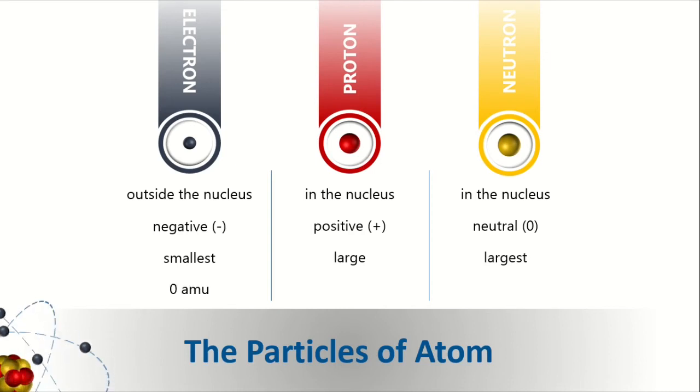Electron, because of its mass, carries an equivalent of zero unit of atomic mass. While proton and neutron both carry one unit of atomic mass. Because of this, the atomic mass of an atom is concentrated on its nucleus.